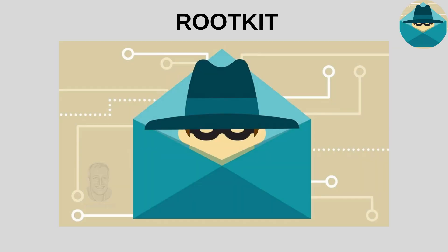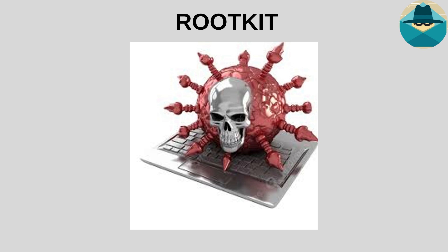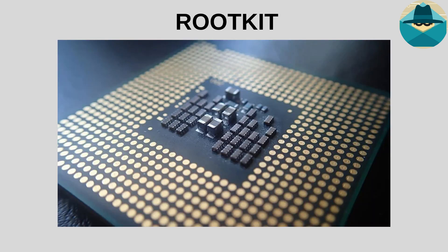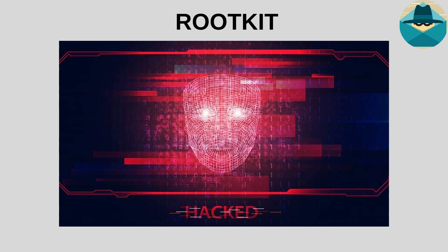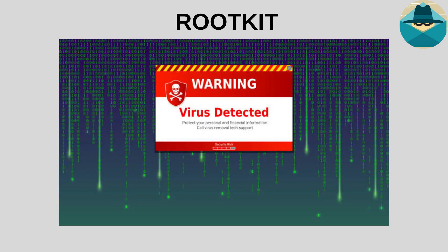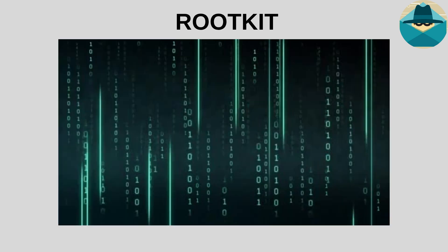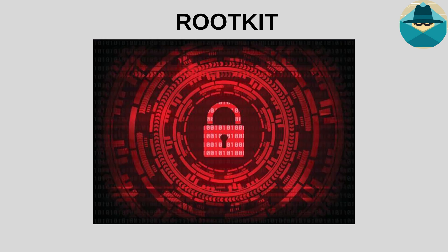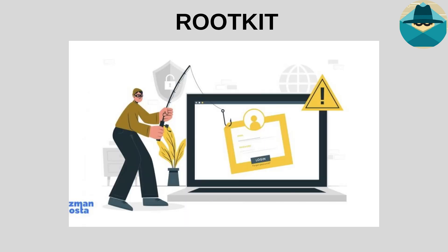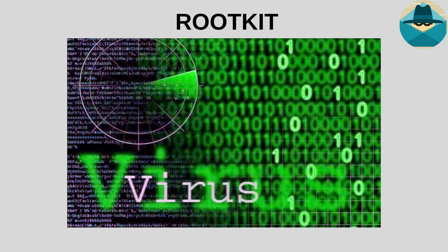A rootkit is a complex type of malware that runs secretly on computers and prevents malware from being detected. Rootkits hide themselves and other malicious programs by embedding themselves at the kernel level of the system, which allows them to hide from antivirus software and the user. Rootkits are usually activated in the background when the computer is infected with other malware. They are used to take control of the system, steal personal data, or make malware persistent.